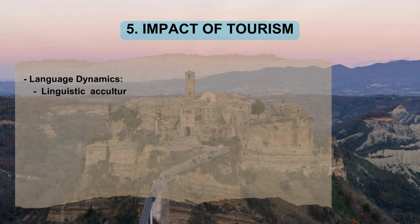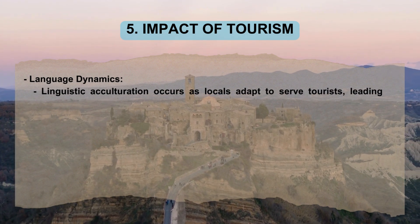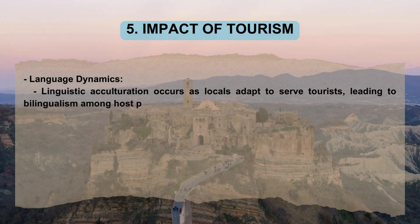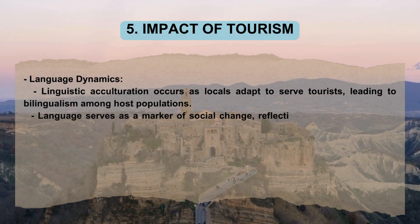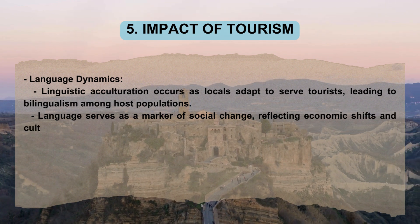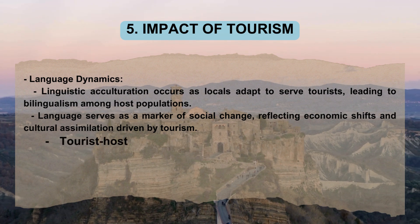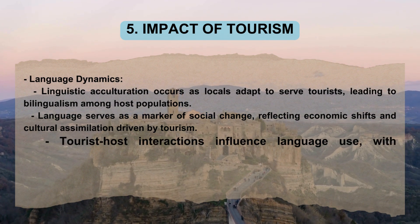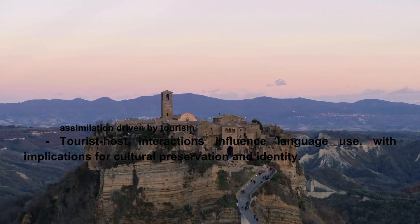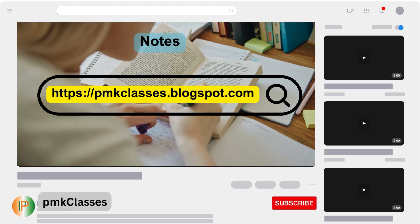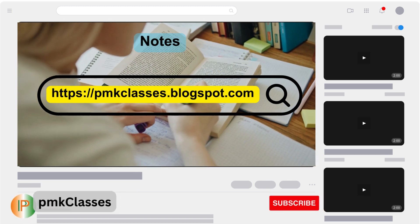Language Dynamics: Linguistic acculturation occurs as locals adapt to serve tourists, leading to bilingualism among host populations. Language serves as a marker of social change, reflecting economic shifts and cultural assimilation driven by tourism. Tourist-host interactions influence language use, with implications for cultural preservation and identity. Notes for this video are available on pmkclasses.blogspot.com, link provided in the description box.